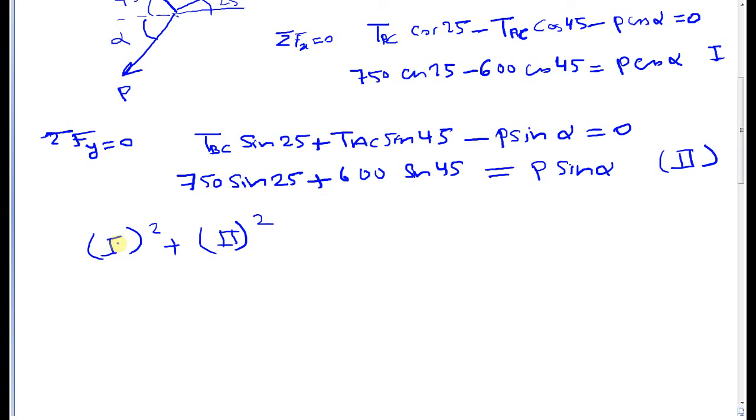If I square equation one and then add it to the square of equation two I will have 750 cosine 25 negative 600 cosine 45 squared, plus 750 sine 25 plus 600 sine 45 squared.